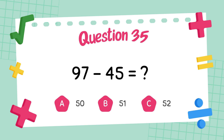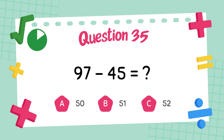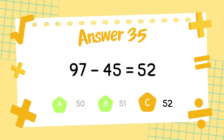What is ninety-seven minus forty-five? The answer is fifty-two.